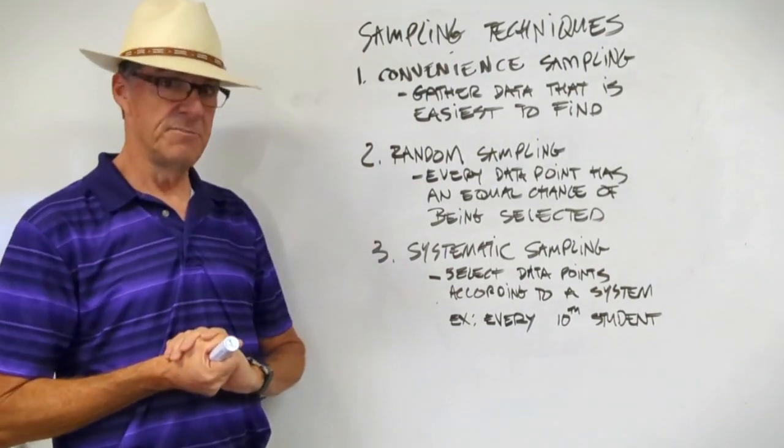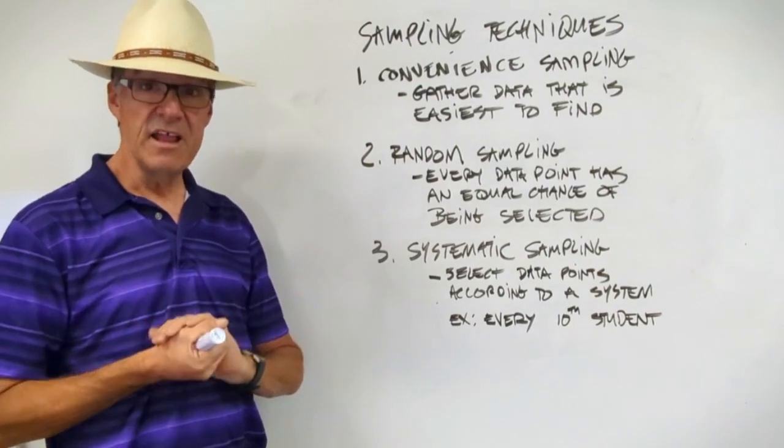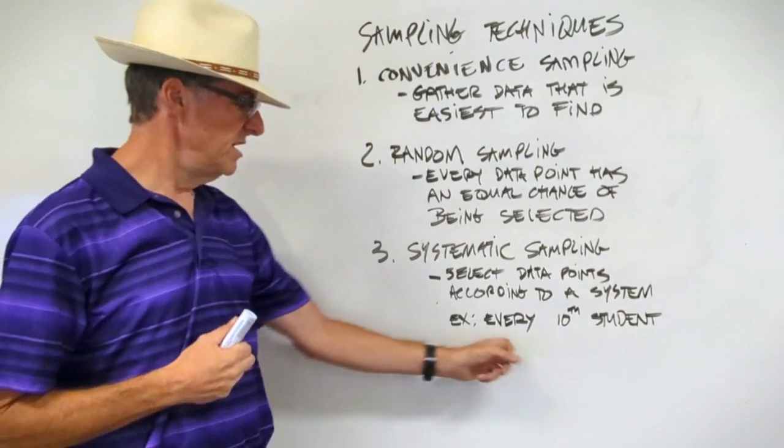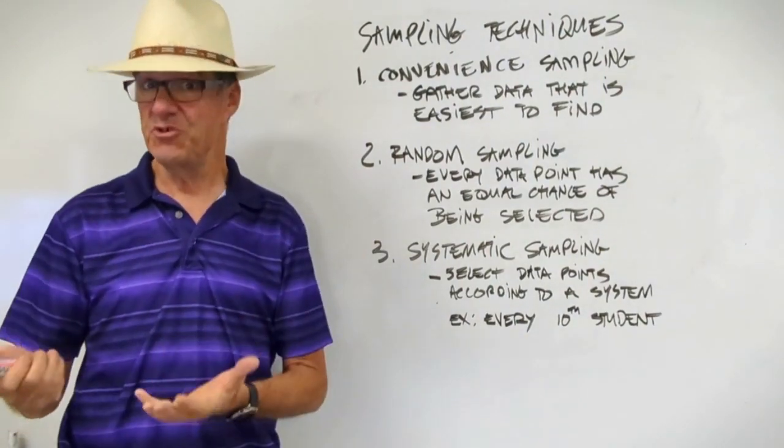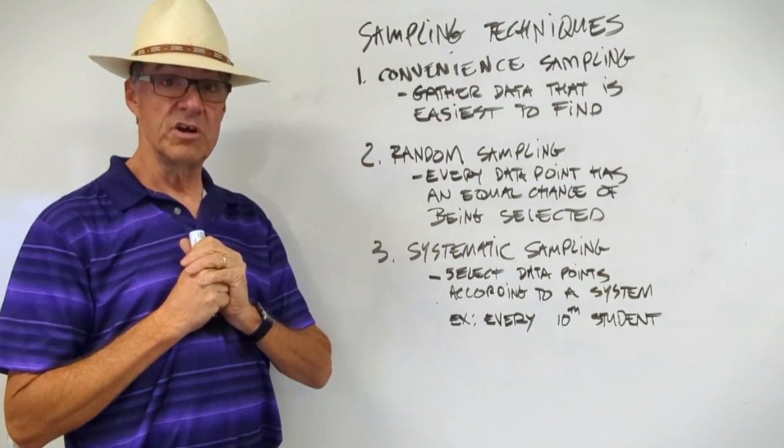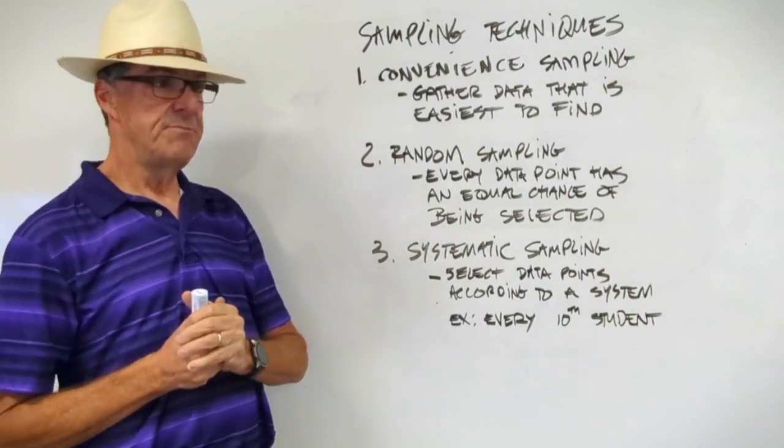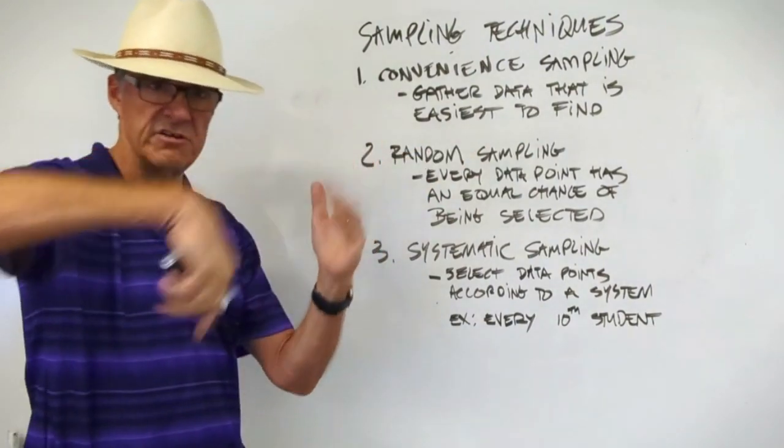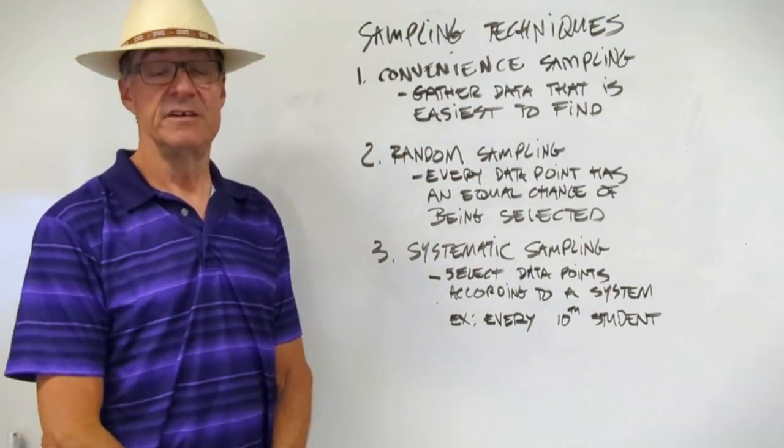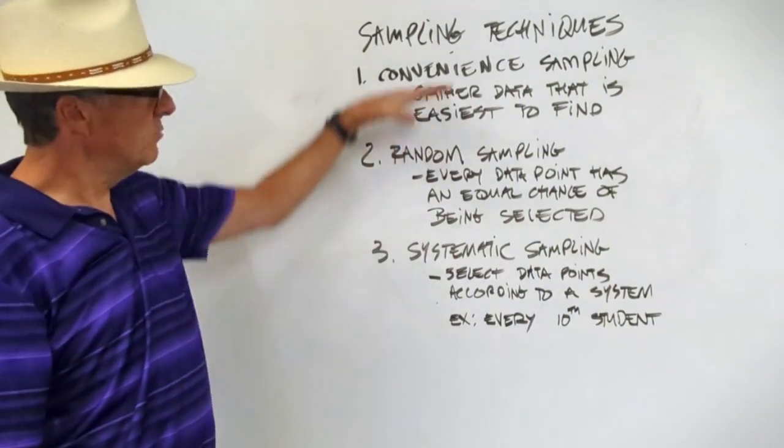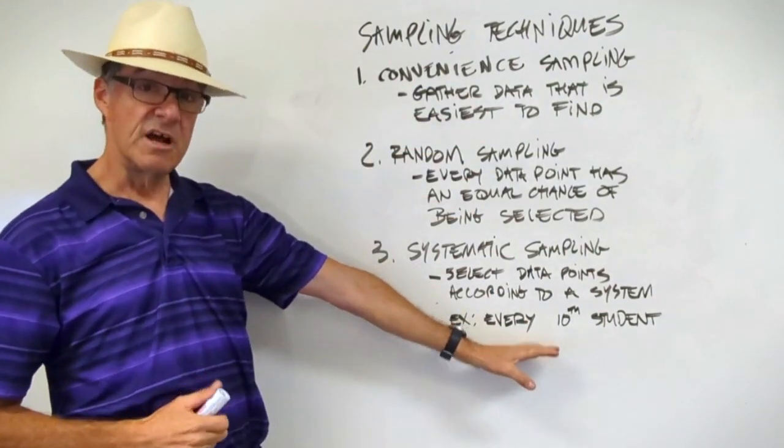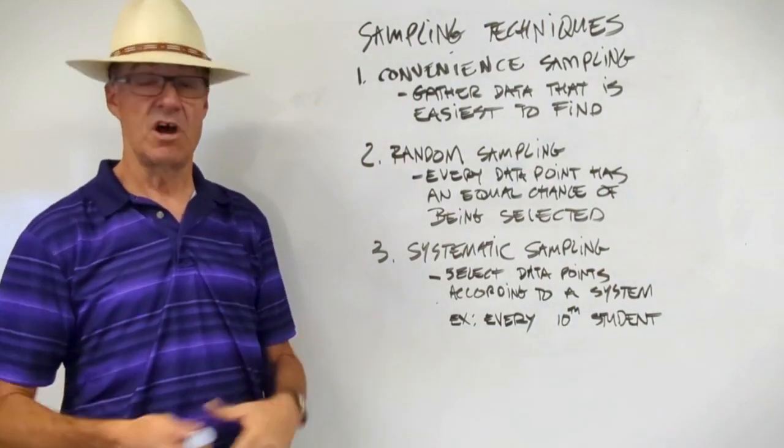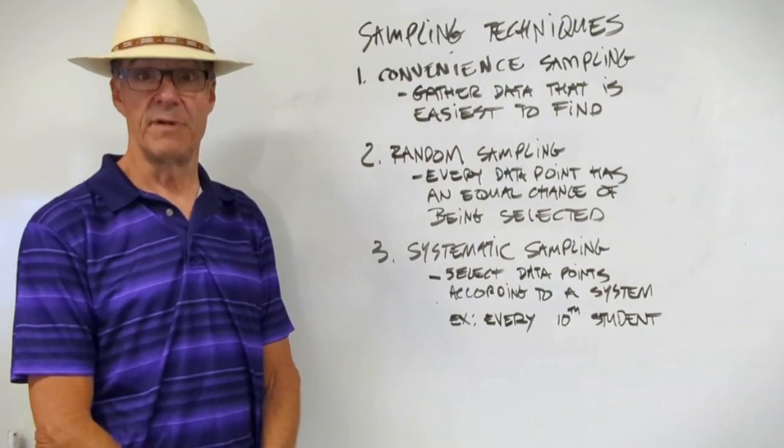Systematic sampling is a little bit more systematic. It still has a random element, but it's systematic. So this would mean selecting data points according to a system, like every 10th student. Or like, for example, in the phone book, you could go through the whole phone book and pick every hundredth name in the phone book. Just count along. There's one. We'll call that person. Go another hundred. We'll call that person. That's systematic sampling. So you're starting to see we're getting a little bit more deliberate about where we're getting our data from so that it truly represents the population we're trying to talk about.